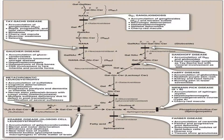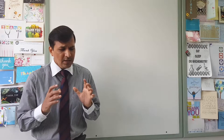Our next disorder is Krabbe disease, which is because of a defect in beta-galactosidase enzyme. This enzyme deficiency leads to accumulation of galactocerebroside, especially in the brain, giving rise to a variety of neurological signs and symptoms including mental retardation. Our last disorder is metachromatic leukodystrophy, which is because of aryl sulfatase enzyme deficiency, giving rise to several neurological signs and symptoms.